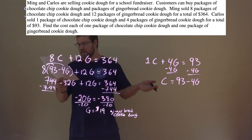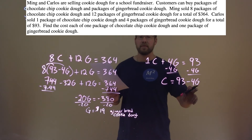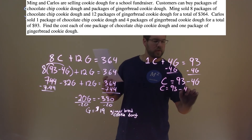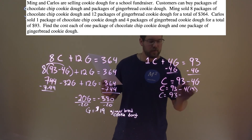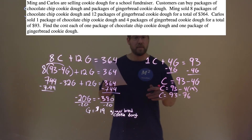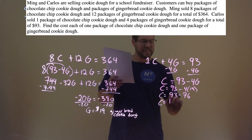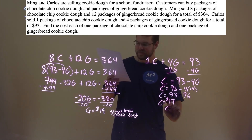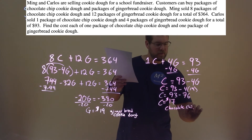Now we need to find the price of the chocolate chip cookie dough. Put the G value of 19 into our equation and solve for C. C equals 93 minus 4 times 19. 4 times 19 is 76, and my stomach's rumbling. C equals 93 minus 76, which is $17. And that's the price of the chocolate chip cookie dough.